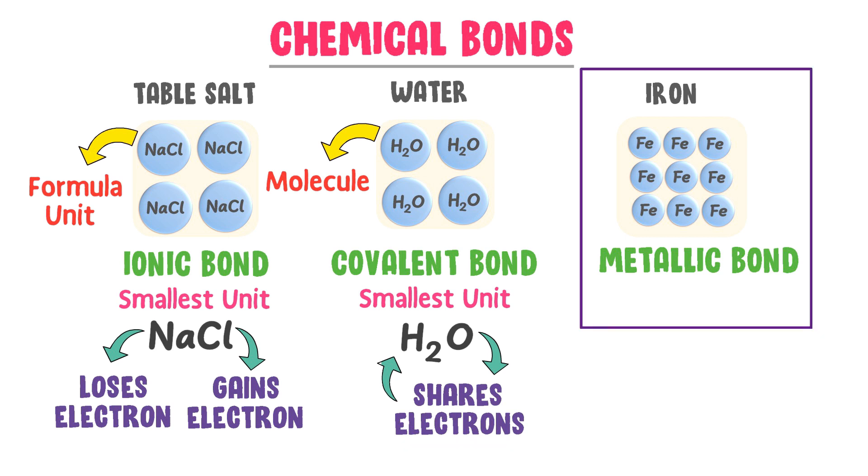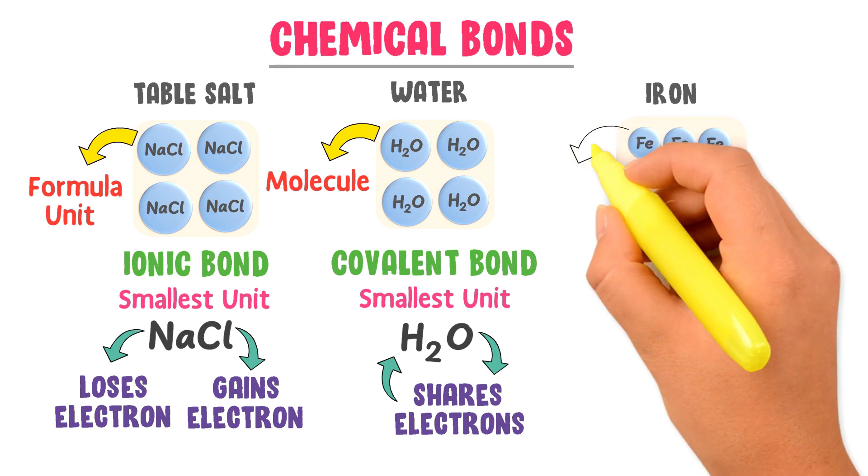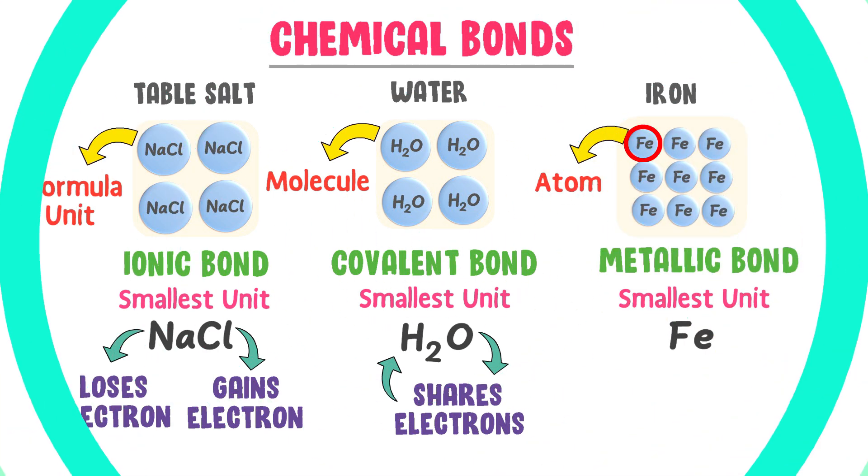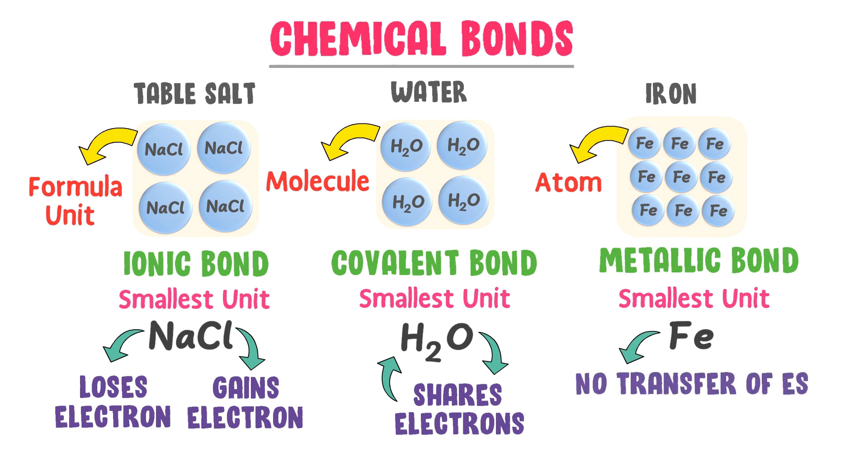Now, in the metallic bond, the smallest unit is an atom like this iron atom. Metallic bond is neither formed by transferring of electrons nor by mutual sharing of electrons. Then, how these all iron atoms are joined together chemically?